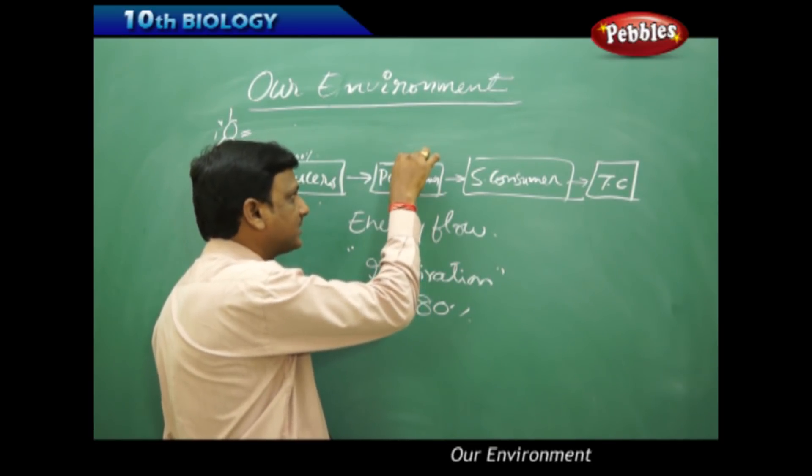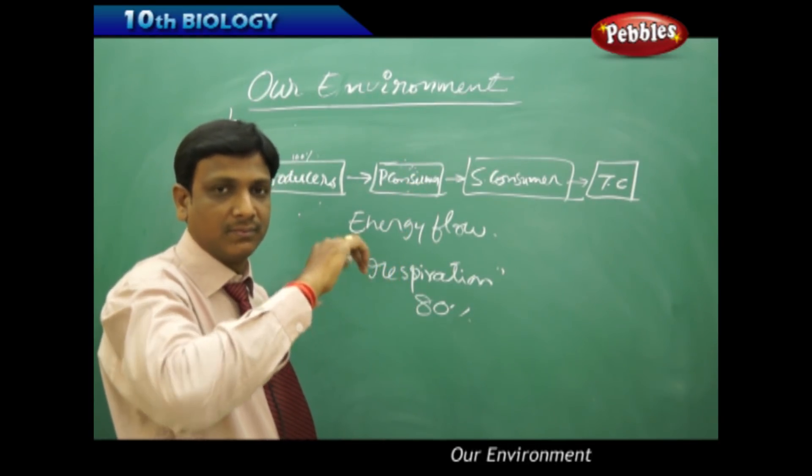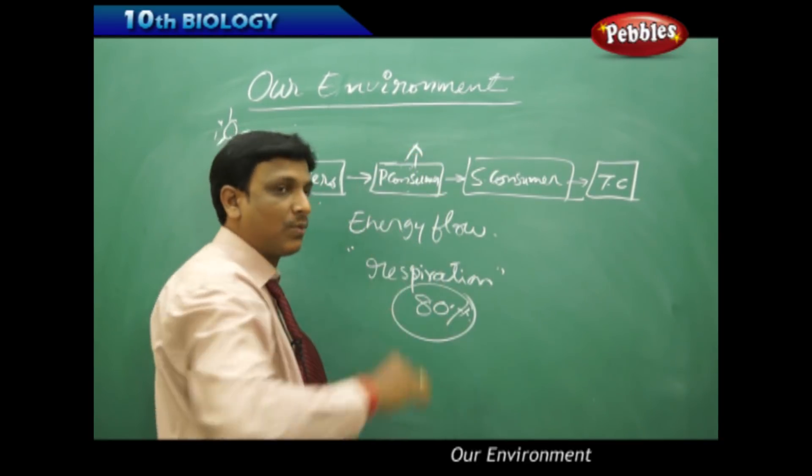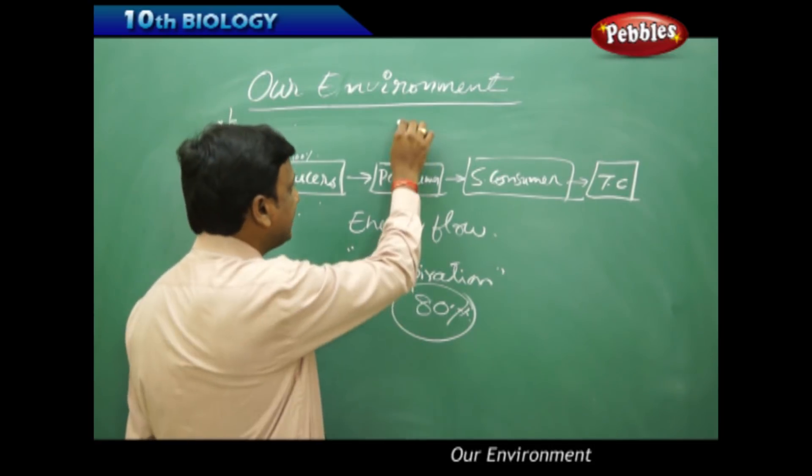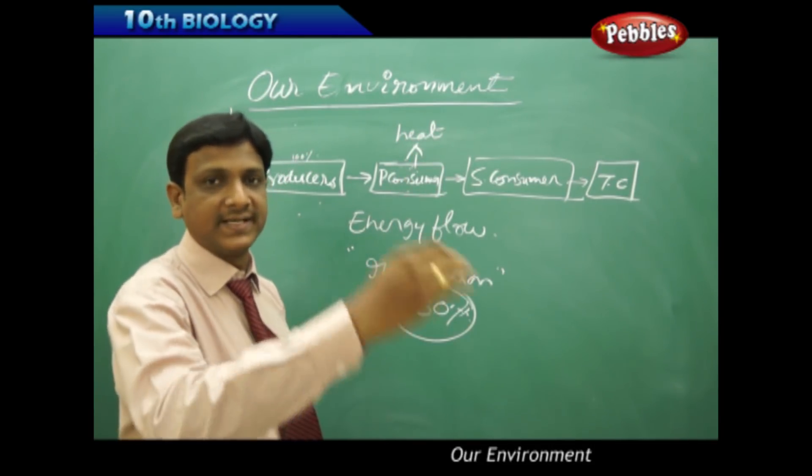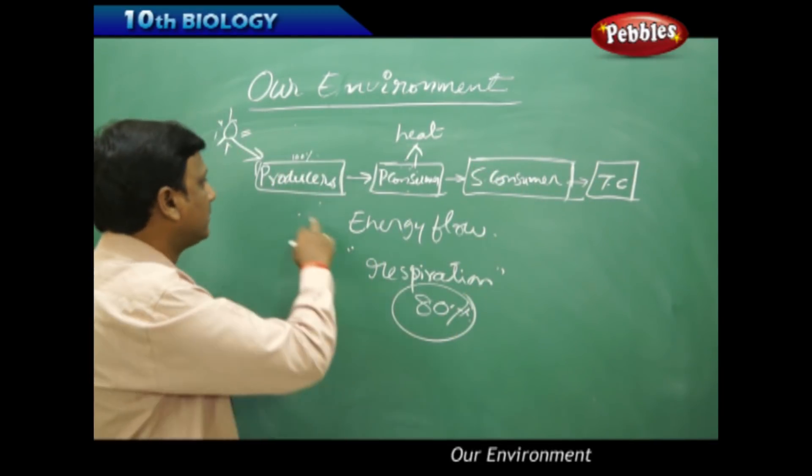So whatever the energy is transferred from the producer to the primary consumer, it is not restored here. Most 80% of it is released into the atmosphere, dissipated in the form of heat. So the energy available for the next level, that is to the secondary consumer, is very low compared to the first level.